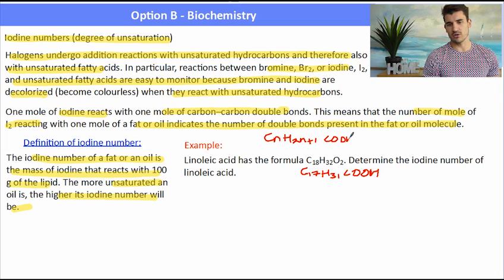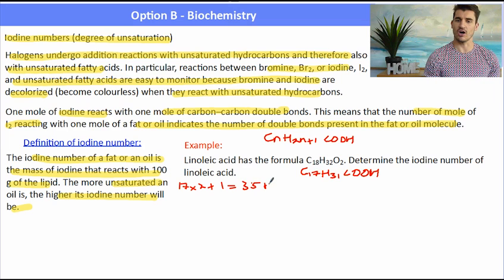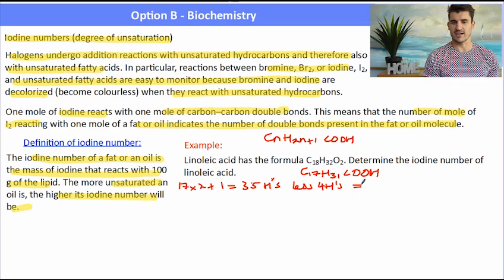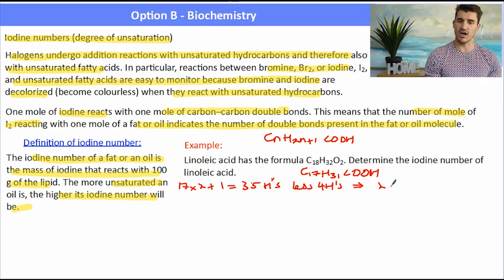The first thing I would encourage you to do is rewrite it with the functional group shown, the COOH shown. And then the formula for a saturated acid, we can work that out and work out how many hydrogens we're missing. So from the formula of linoleic acid, we work out that we have 31 hydrogens. A saturated fat would have 35 hydrogens.